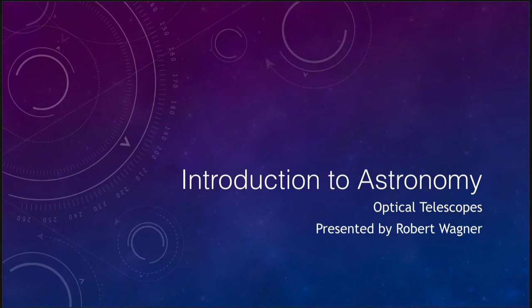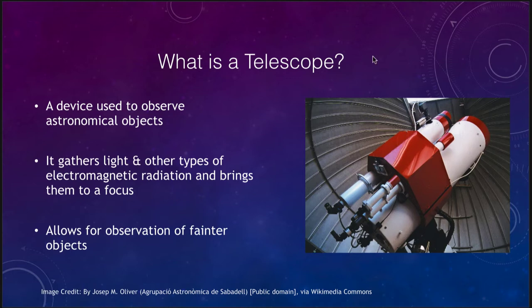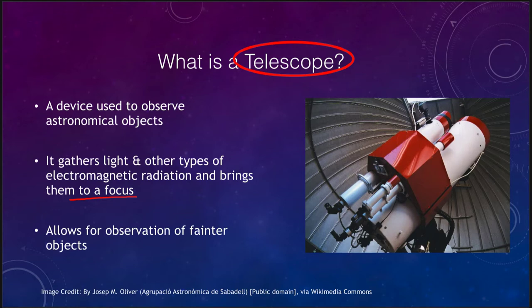Let's define what a telescope is. A telescope is a device used to observe astronomical objects — it can gather light and other types of electromagnetic radiation and brings that light to a focus. It enlarges the collecting area so we can see fainter objects. Before the development of the telescope in the early 1600s, everything was done visually. Once we developed a telescope, we could observe fainter objects that we would not be able to see at all.